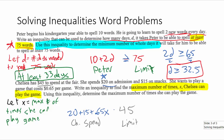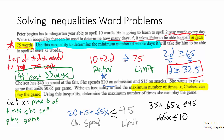Let's think about which way the inequality sign goes. The amount Chelsea can spend has to be less than or equal to 45, because if she spent more than $45 she'd be in debt. So: 20 + 15 + 0.65X ≤ 45. Combining like terms on the left gives 35 + 0.65X ≤ 45. Subtracting 35 from both sides: 0.65X ≤ 10.